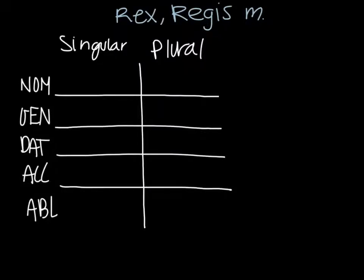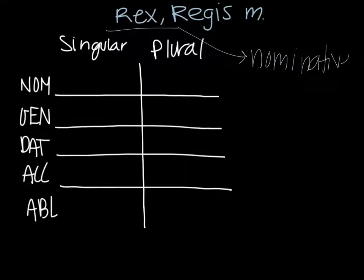So for this lesson we are going to decline the word rex regis which is a masculine word. The first thing we should do is just recognize the words we already have. We have rex which is the nominative and we have regis which is the genitive.